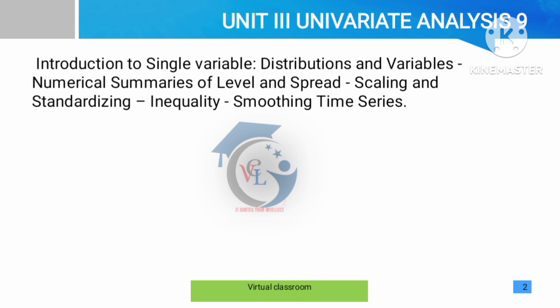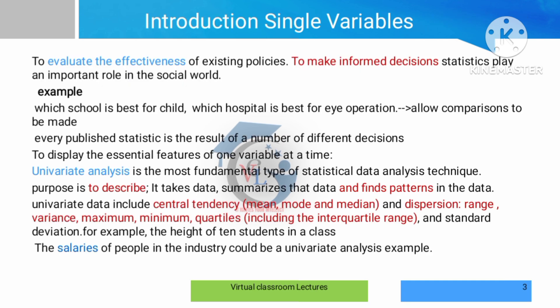Univariate means single — 'variate' refers to a single variable. So univariate is a single variable analysis. The previous two units covered other topics, and the remaining three units cover full data analysis: univariate, then bivariate, and multivariate analysis.